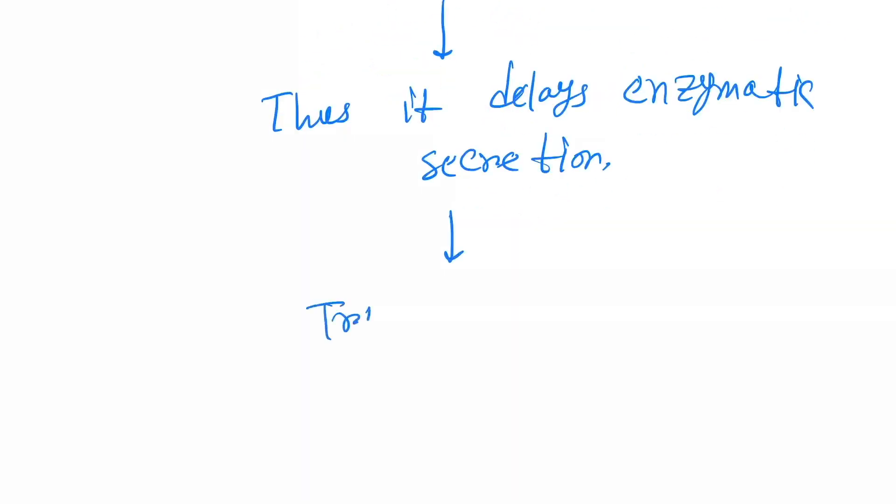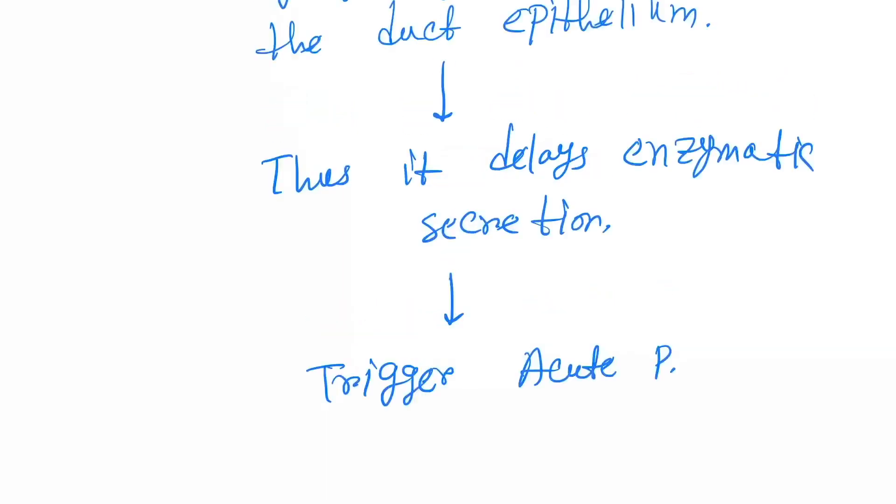Now the causes of acute pancreatitis. So the first cause is chronic alcohol intake. This is the most common cause.